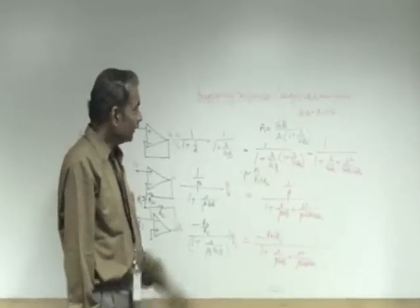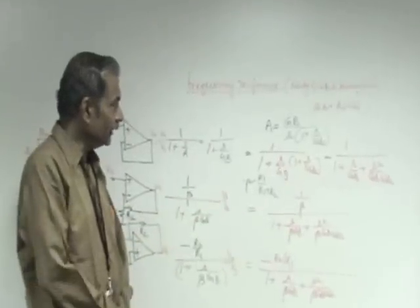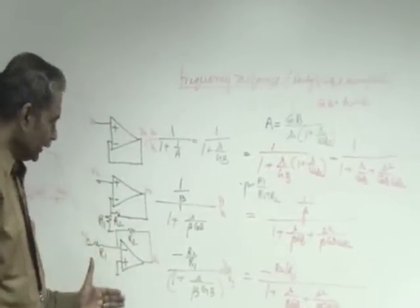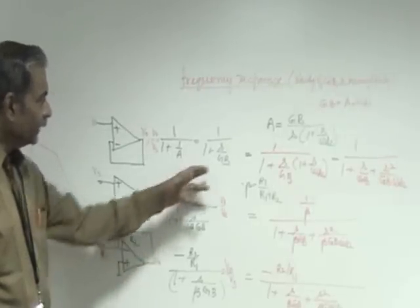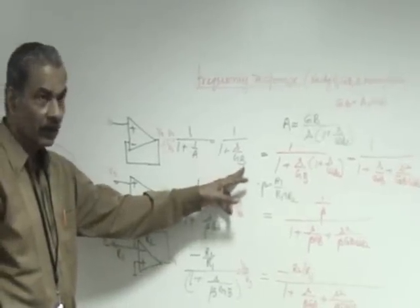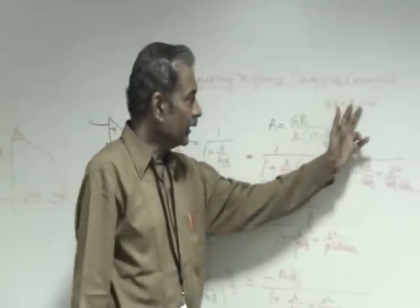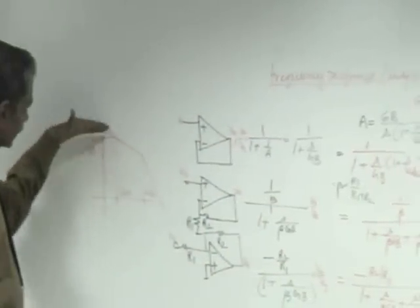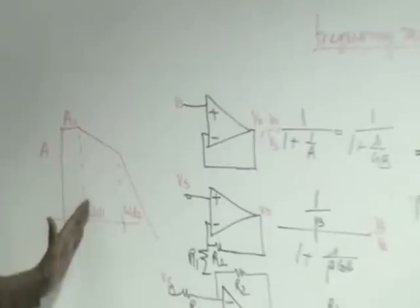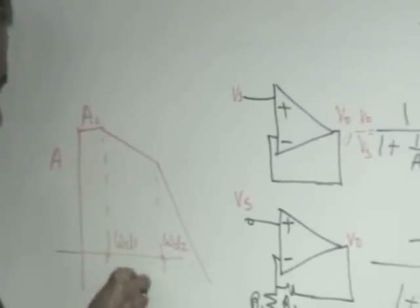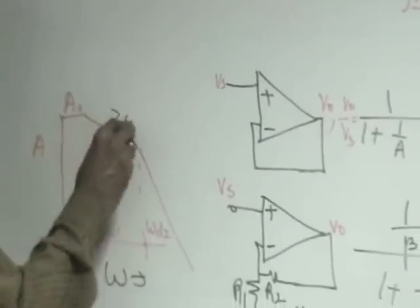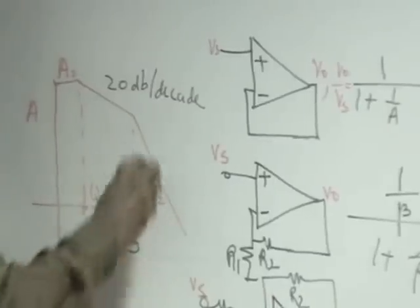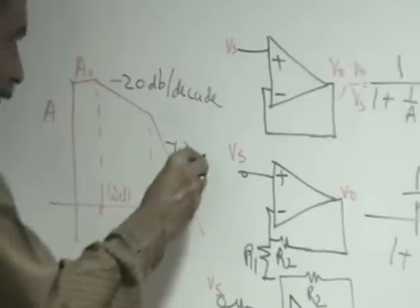We had seen the frequency response of the amplifiers like unity gain non-inverting amplifier and inverting amplifier will be determined by the gain bandwidth product of the op amp which is nothing but the DC gain into the first corner frequency. The op amp characteristic having A naught as the DC gain and the first corner frequency where the gain falls off with respect to frequency at 20 decibels per decade.